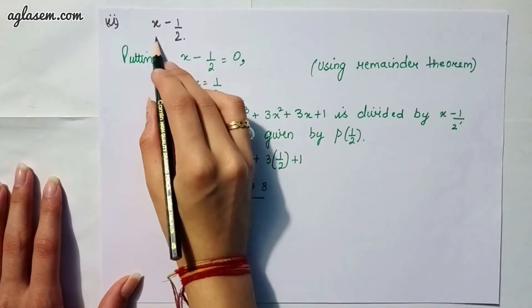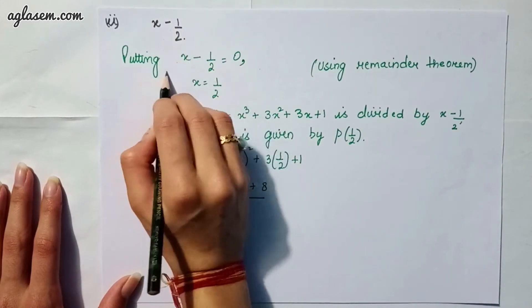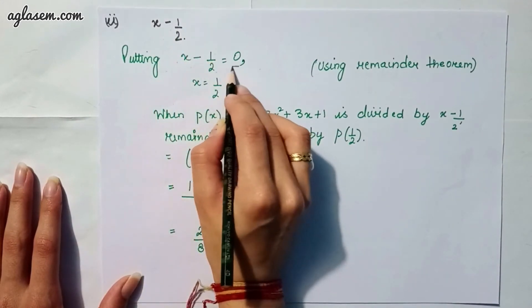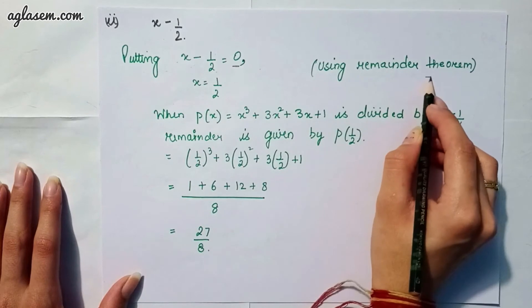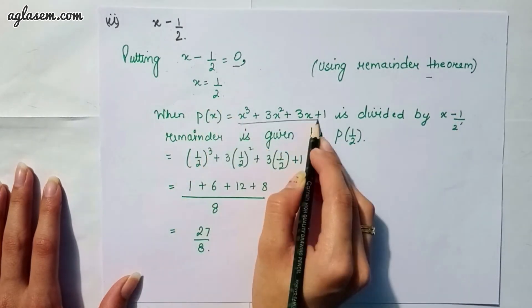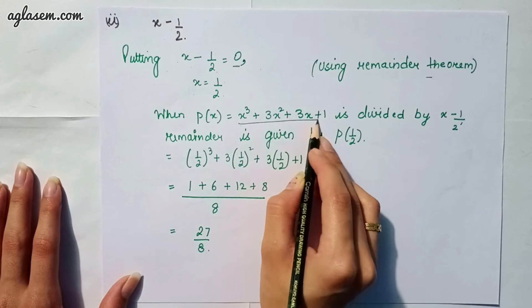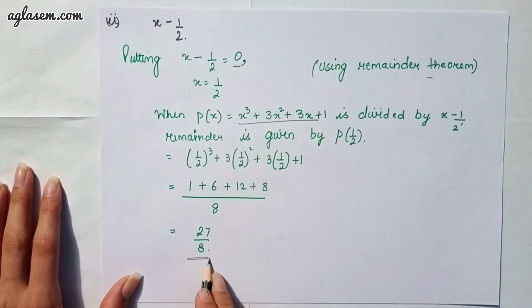Moving to our second part which says, x - 1/2. Again, putting x - 1/2 = 0, that is, using remainder theorem, our x will be 1/2. In this equation, we will get answer as 27/8.